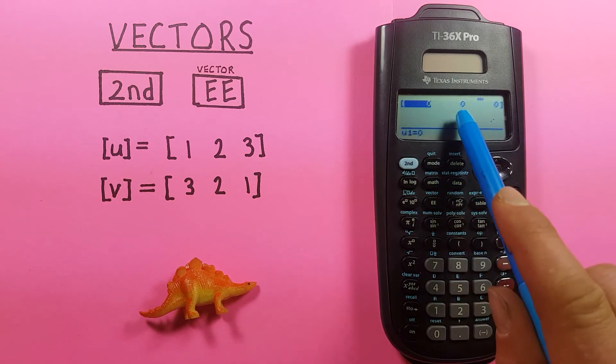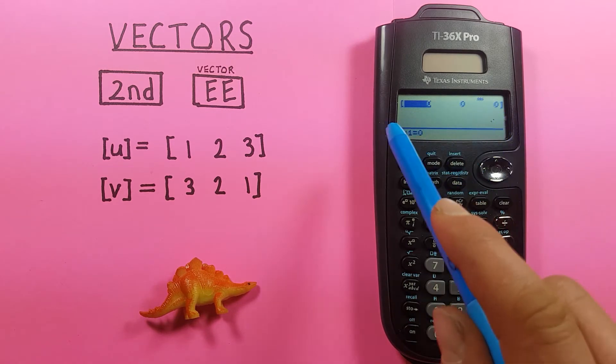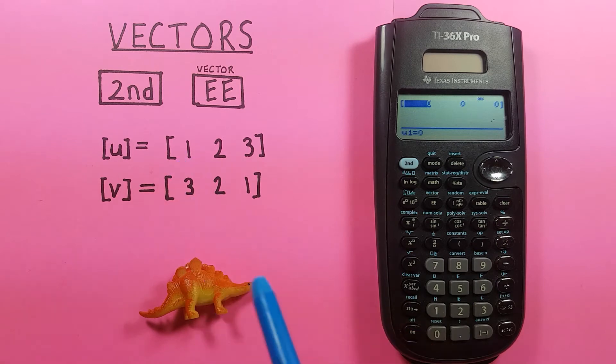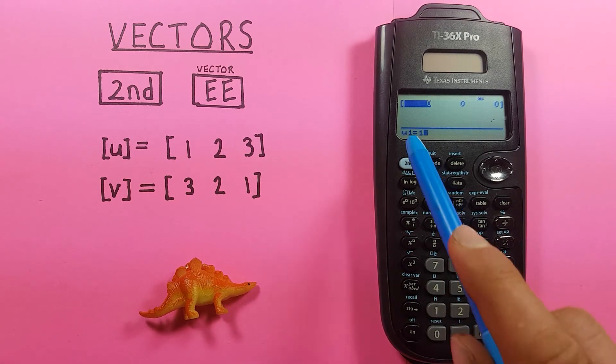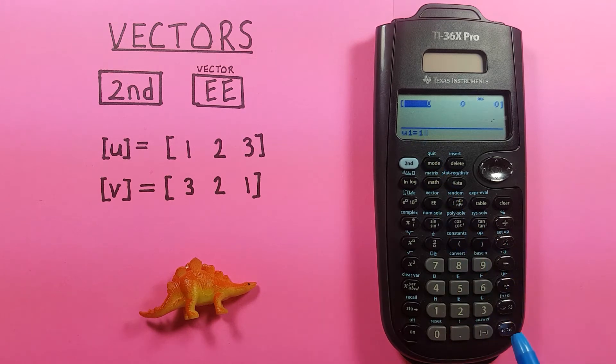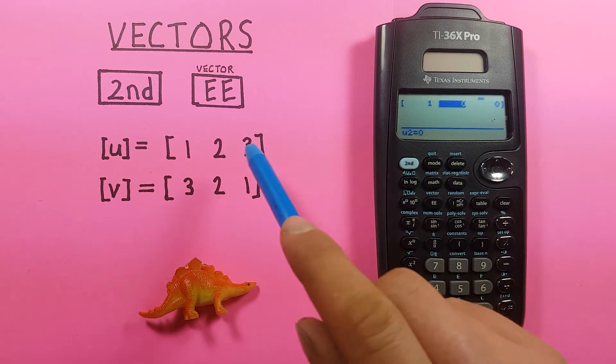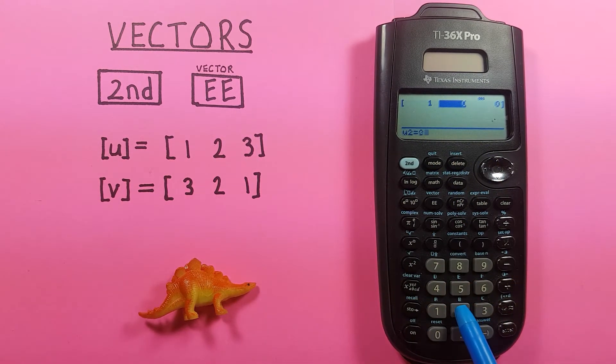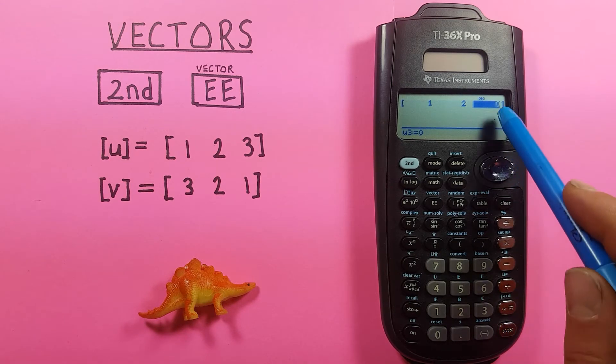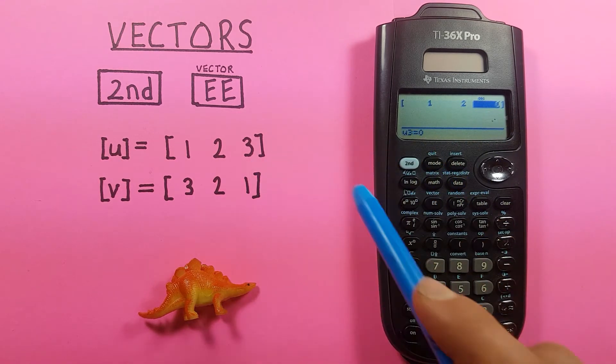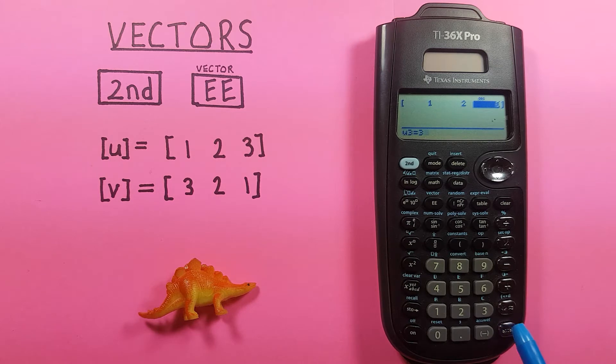Now we're at this menu here. This is our three different dimensions for our U vector. You can see our first dimension is one, so we'll press one. It says U1 equals one there. Press enter. Our second one is two. Enter. And U3 is three. So we'll press enter. There we go.